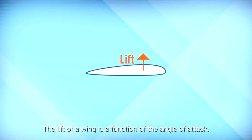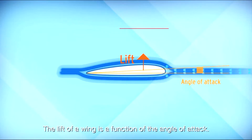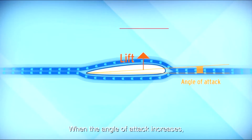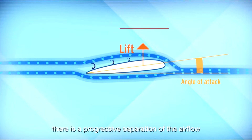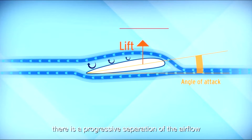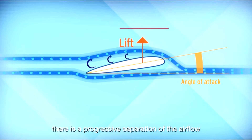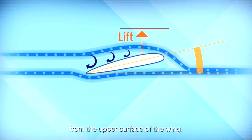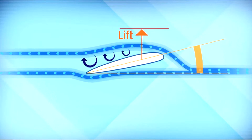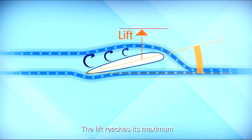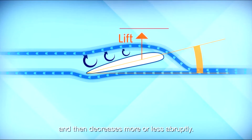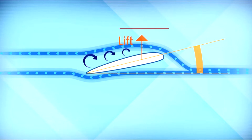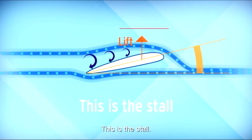The lift of a wing is a function of the angle of attack. When the angle of attack increases, there is a progressive separation of the airflow from the upper surface of the wing. The lift reaches its maximum and then decreases more or less abruptly — this is the stall.